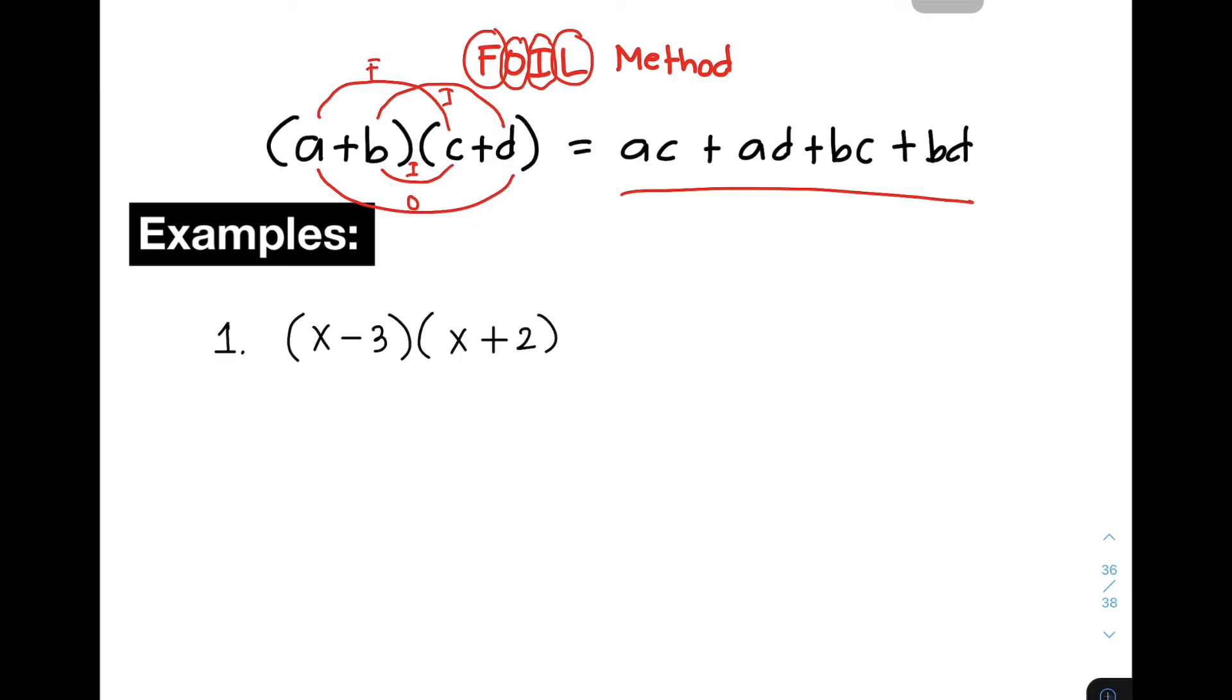Now for your better understanding, I will give you two examples to apply FOIL method. So let's have example number one. We have here x minus 3 times x plus 2. As you can see, our two polynomials are both binomial. So when do we use FOIL method? We use FOIL method when the count is the same or when we're multiplying two binomials. And actually, we're actually using distributive property. But we just use a new name for it.